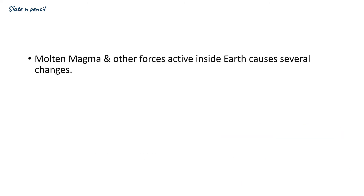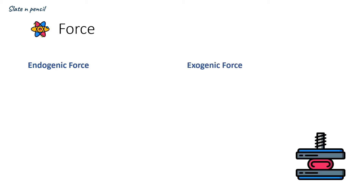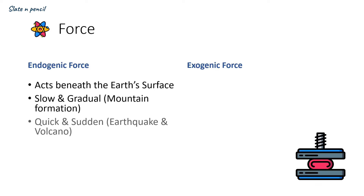Let's discuss more about magma. Molten magma and other forces active inside the Earth cause several changes — either sudden or gradual. Forces that affect the Earth's crust are divided into two categories: endogenic forces and exogenic forces. Endogenic forces are those which act beneath the Earth's surface. They can be slow or gradual, or quick and sudden. Slow and gradual forces act in the formation of mountains, whereas quick and sudden endogenic forces cause earthquakes and volcanoes.